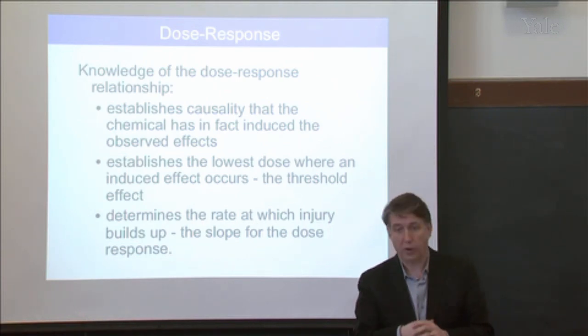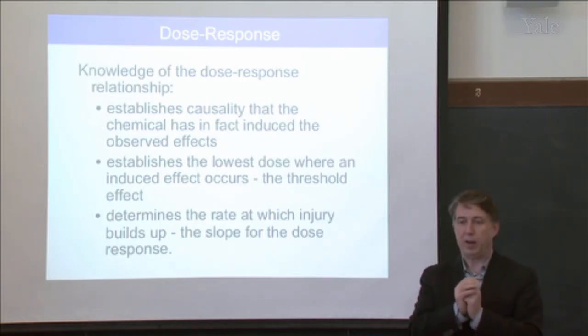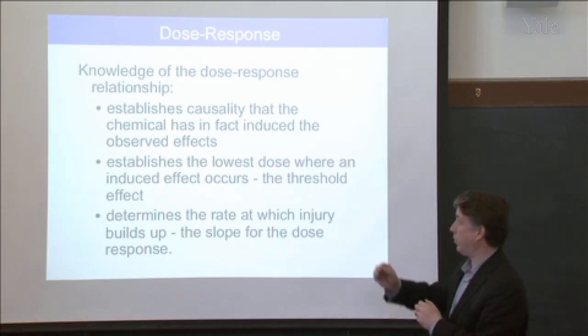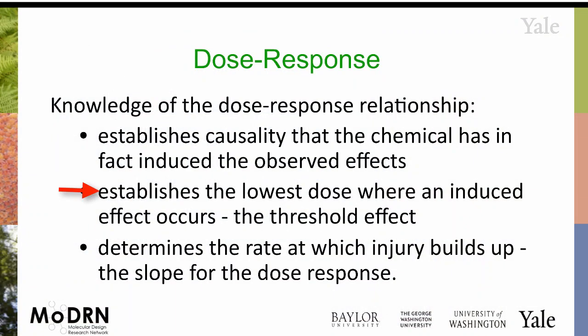Even with dose-response curves, it's challenging. But that's why dose-response curves are so important. It establishes the lowest dose at which the effect occurs, and this is going to be important when we discuss thresholds. And it determines the rate at which the injury builds up — the slope of the dose-response curve is going to be very important.